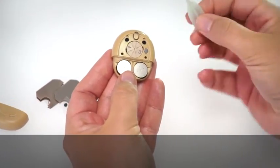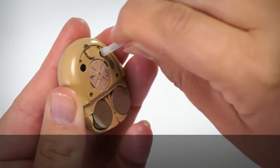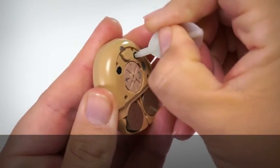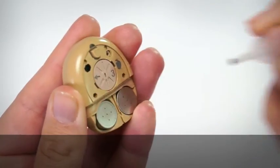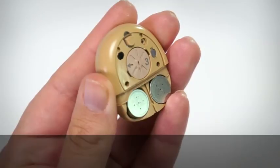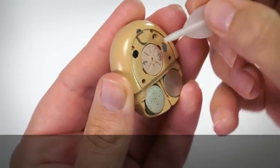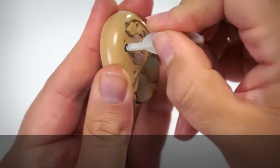Firmly push the tip of the removal tool into the middle of the microphone protector. Turn the tool 90 degrees clockwise and lift out the used microphone protector. Pull the used microphone protector from the tool and discard. Remove the other microphone protector in the same way.